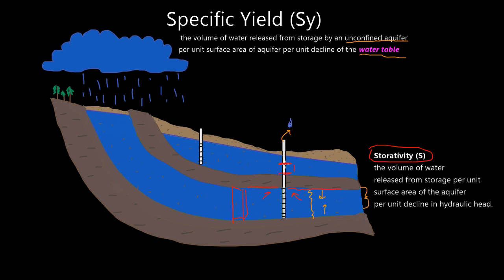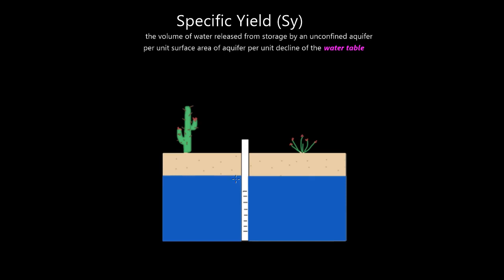We're getting into the difference between confined and unconfined aquifers again. In confined, we talk about hydraulic head and potentiometric surface because it's under pressure — we're seeing a pressure head. In unconfined, we're actually at the water table. It's not under pressure; there's no pressure acting on any confining units. So let's draw out specific yield in an unconfined setting. Here is our unconfined aquifer — you'll notice we're in a desert this time.